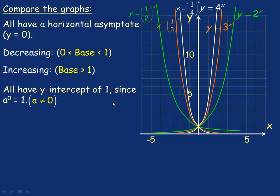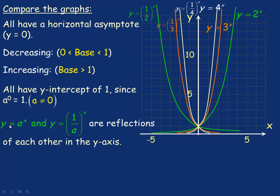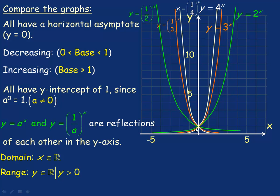The only exception is you can't evaluate 0 to the power of 0, which is why that restriction is listed. Otherwise, they all have a y-intercept of 1. Also, y equals a to the x and y equals one over a to the x are reflections of each other in the y-axis. All these functions have a domain of the entire set of real numbers — they go forever to the left and forever to the right. They all have a range where y is completely above 0; they never actually touch the x-axis. No power of a positive base, whether a whole number like 2 or a fraction like 1/2, can ever give a value of 0 or below.